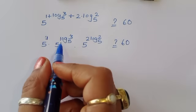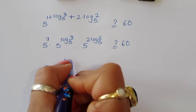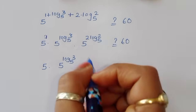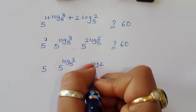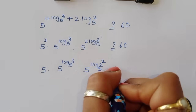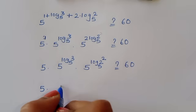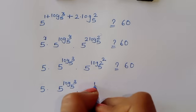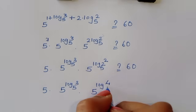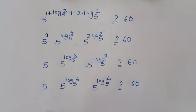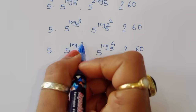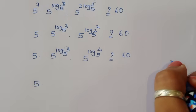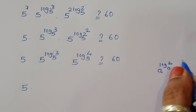So we have 5 power 1, which is 5, times 5 power log of 3 to the base 5, times 5 power 2 times log of 2 to the base 5. We can write 5 power log of 2 to the base 5, and this becomes squared, giving us 5 power log of 2 squared to the base 5, and we need to check this equals 60.